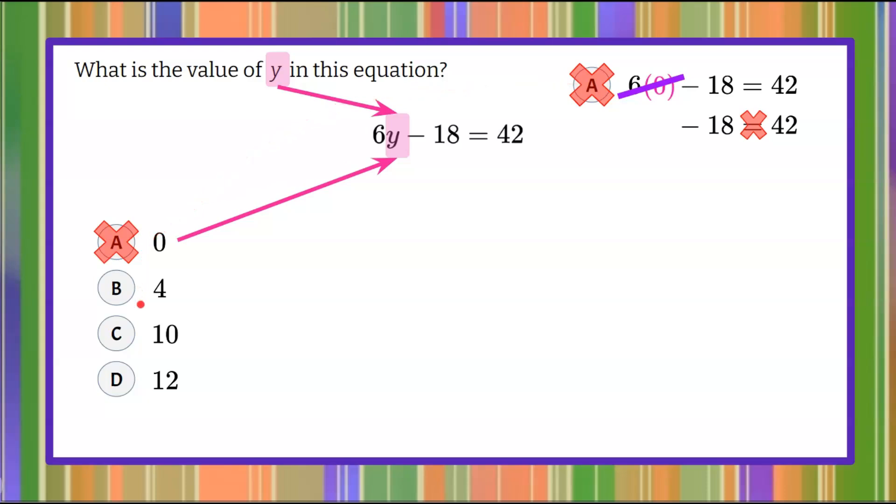Now let's try answer choice b, which is 4. We're going to come over to our workspace, and for b, we're going to rewrite our equation replacing y with 4. 6 multiplied by 4 is 24. 24 subtract 18 is 6. 6 does not equal 42, so b cannot be the value of y in this equation.